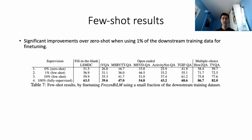Finally, we introduce a new few-shot video QA setting, where we fine-tune our pre-trained model on a small fraction of the downstream training dataset. We show promising performance in this setting, as the accuracy improves significantly by using only 1% of the downstream training dataset. Further details and insights are provided in our paper. Thank you so much.